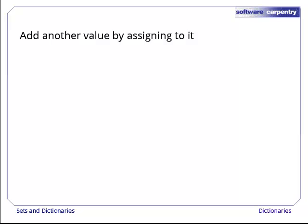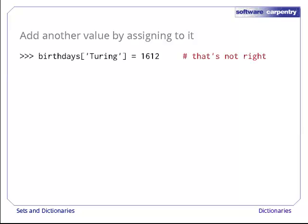If we want to add another key value pair to a dictionary, all we have to do is assign something to it. Here, for example, the expression birthdays of Turing equals 1612 adds a third entry to our dictionary, with the key Turing and the value 1612.